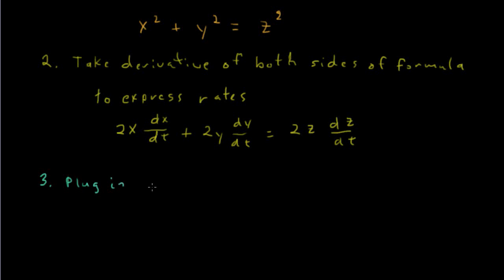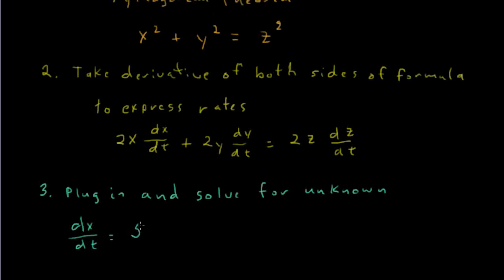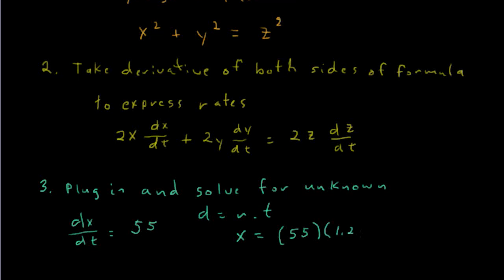Step 3 is to now plug in and solve for the unknown. And in our case the unknown is dz/dt, how fast the distance between the two cars is increasing. So let's write down everything else. dx/dt is the speed of car X, which is 55 miles per hour. And we can find what the distance x is by using the formula rate times time. Car X is going at 55 miles per hour for 1.2 hours, and that gives us a distance of 66 miles.